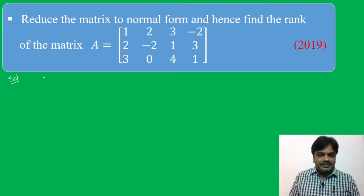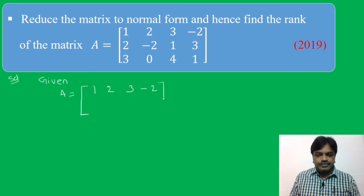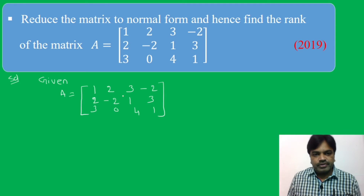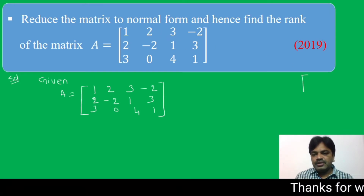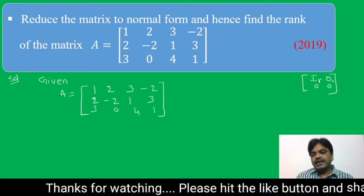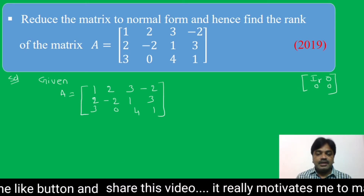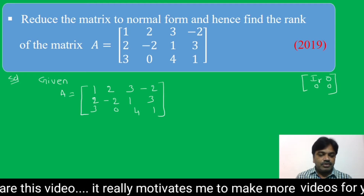First, write the given matrix. Given A is equal to: 1, 2, 3, minus 2; 2, 1, 3, 1; 3, 3, 0, 4, 1; 3, 0, 4, 1. What is normal form? Normal form is IR, 0, 0, 0. How do we get this form? By applying elementary row operations and column operations.